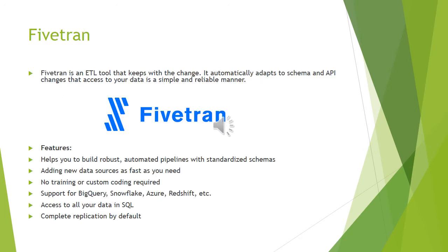The fourth ETL tool is Fivetran. Fivetran is an ETL tool that keeps up with change. It automatically adapts to schema and API changes so that access to your data is simple and reliable. Some features of Fivetran are: it helps you to build robust automated pipelines with standardized schemas, you can add new data sources as fast as you need, and there is no training or custom coding required.